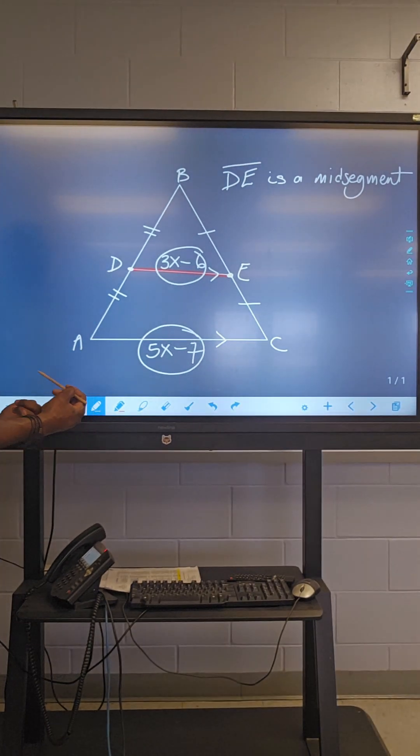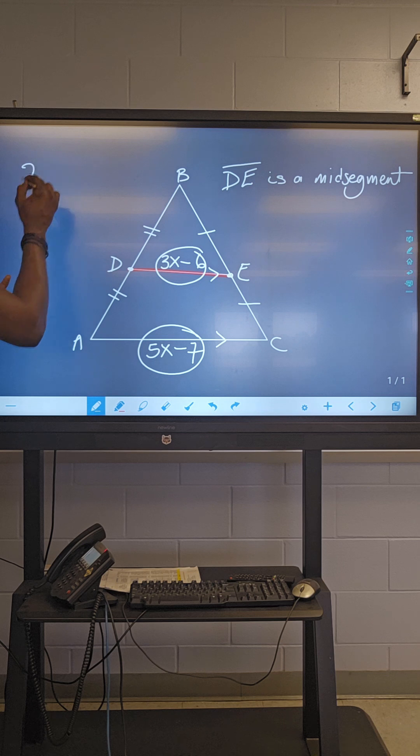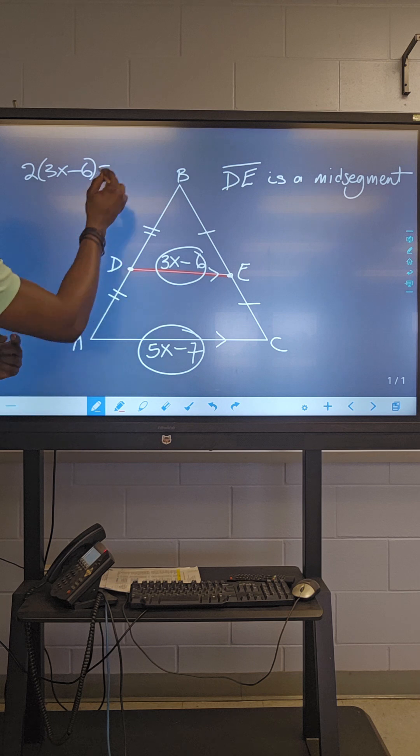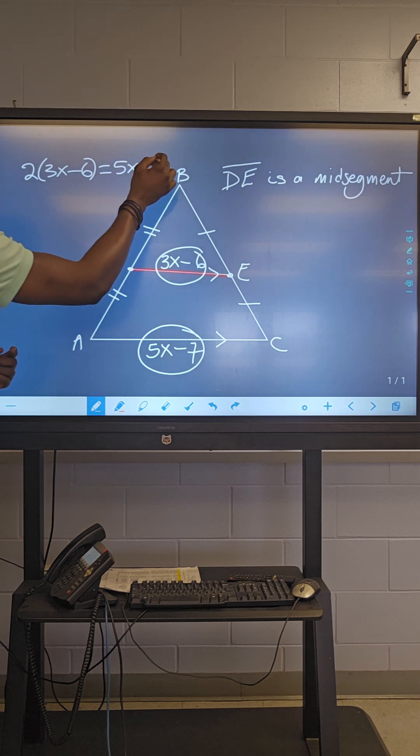So, let's work that out. So, if we want to find X, then two times 3X minus six is equal to 5X minus seven.